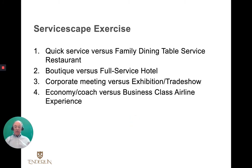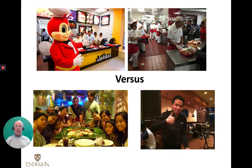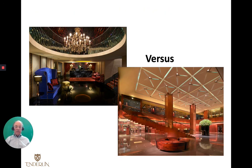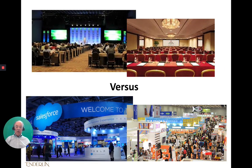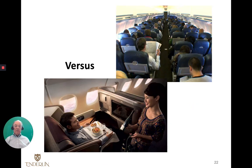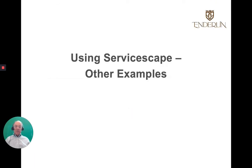We're going to do a servicescape exercise. We're going to look at four different types of contrasting services in the same type of facilities: quick service versus family dining, boutique versus full-service hotel, a corporate meeting versus an exhibition trade show, and economy coach versus business class airline. You're looking at the physical evidence that shows you what type of facility it is and how they're different from each other — what do you see different in each one?